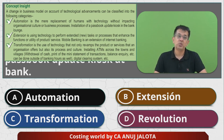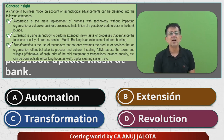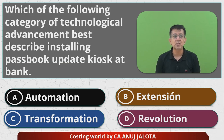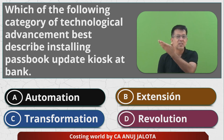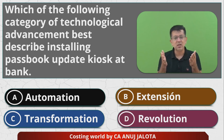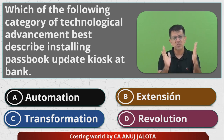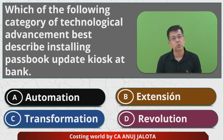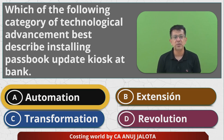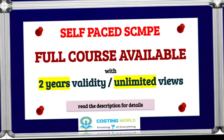Coming back to the question, the answer is very obvious. Whenever a passbook gets updated with the help of a machine kiosk — like kiosks at airports where you print your ticket — a kiosk is basically a machine. So that is an example of automation. The correct answer is A — automation. I'll see you next time in another lecture. Happy learning, bye, take care!